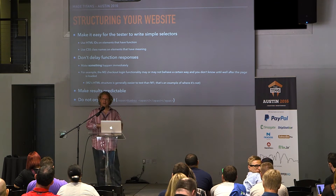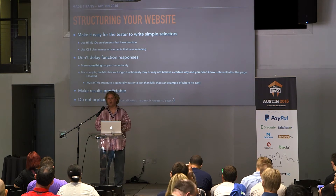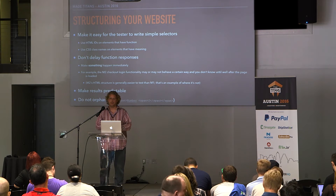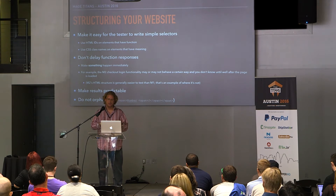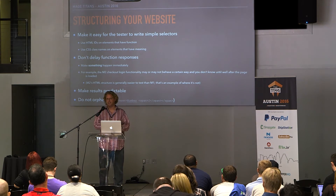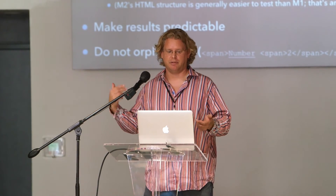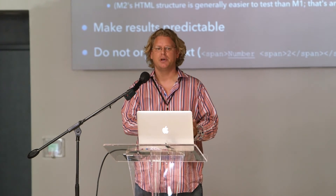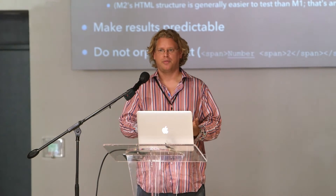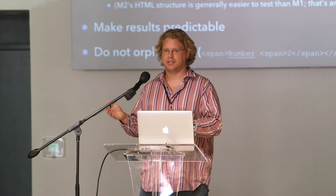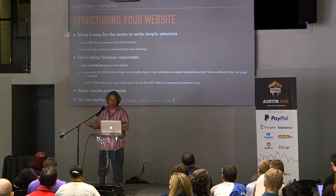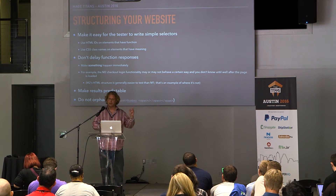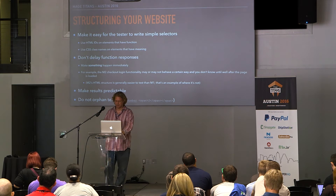When you're building out tests, structure your HTML in a way that makes writing easy selectors possible. If you have specific functionality on the page that needs to be tested, assign an HTML ID to it. You have to use some level of judgment, but if you have a save button, give it an ID of 'save.' It's so much easier to work with HTML IDs than to build complex CSS queries to get to the element you're looking for. Also, have CSS class names on elements that have meaning.